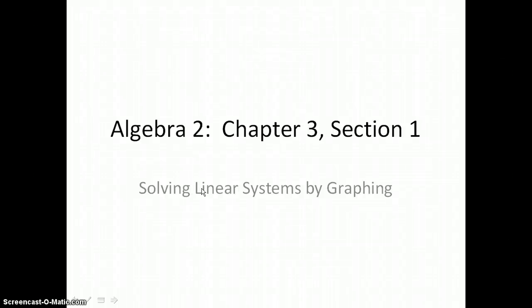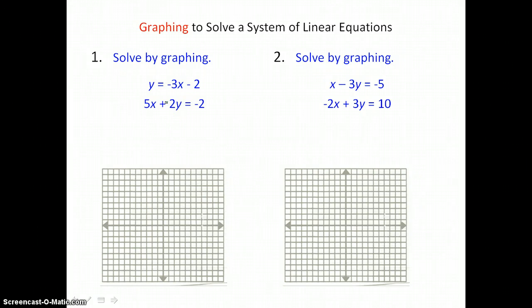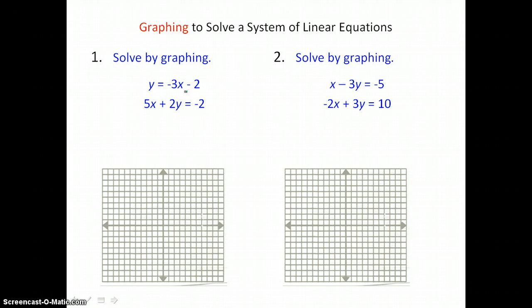In section 3.1, you will solve linear systems by graphing. In our first example, our linear system looks like this — two equations, two unknowns. To graph those two equations or lines, we want to put the equations in slope-intercept form, y equals mx plus b form.